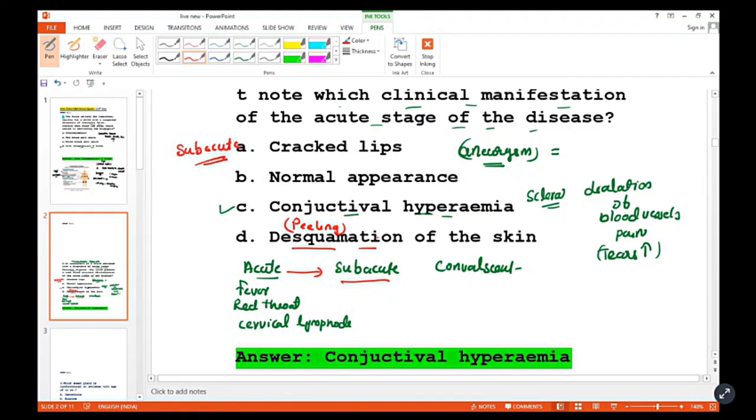Joint pain occurs around the subacute stage. Also, cardiac manifestations and thrombocytosis occur, where platelets increase.